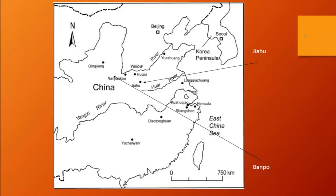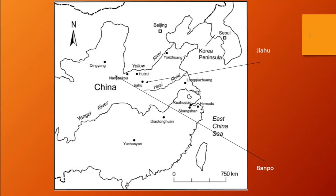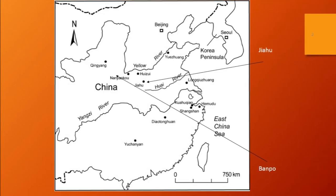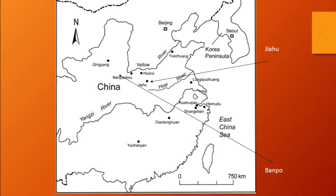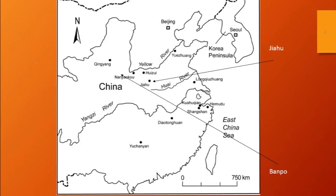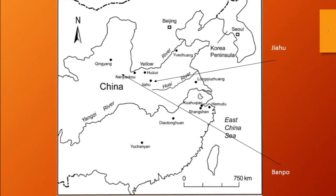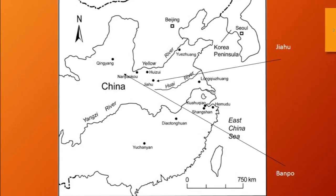What you're looking at here is a map of China. I want to start off looking at two Neolithic villages: Jiahu and Banpo. You can just follow the arrows here to see where these are.